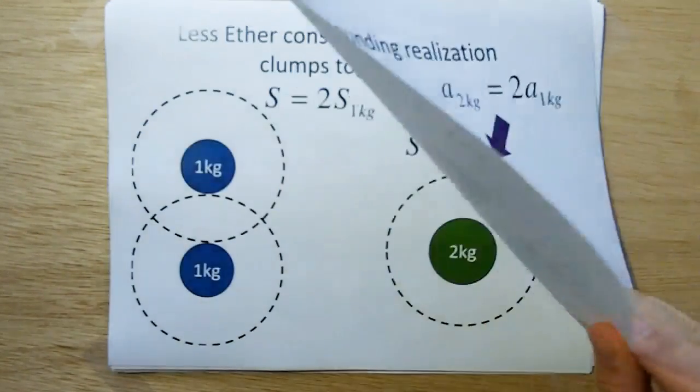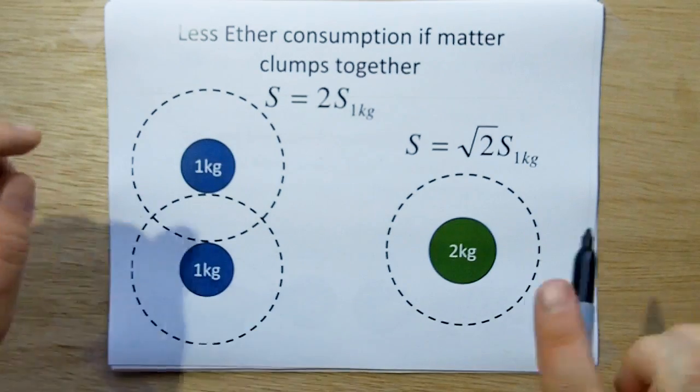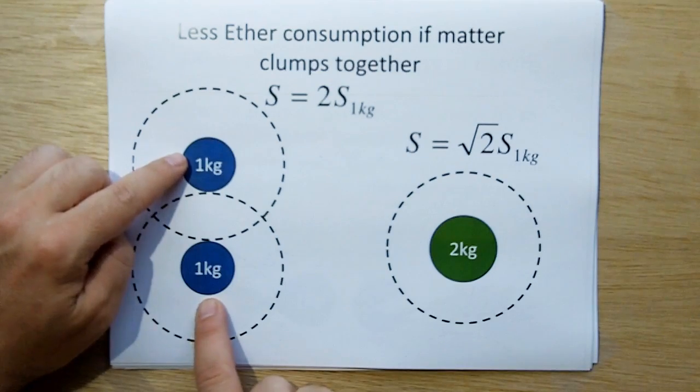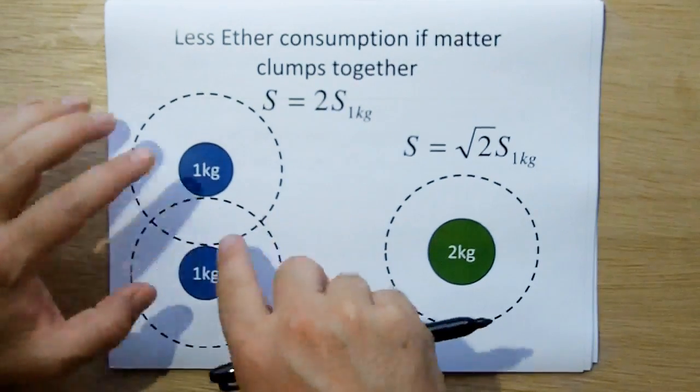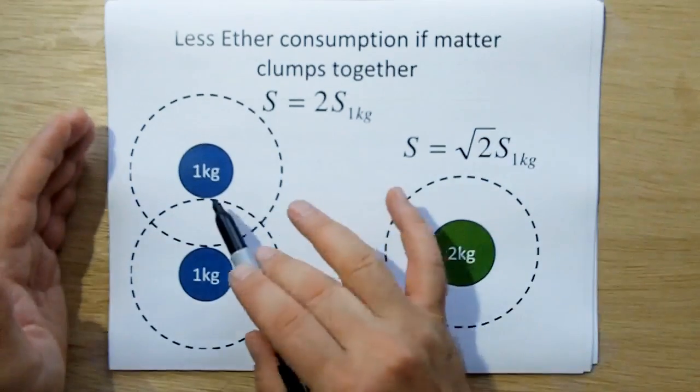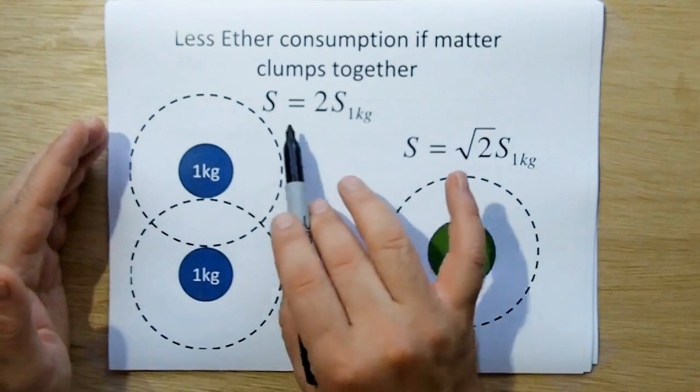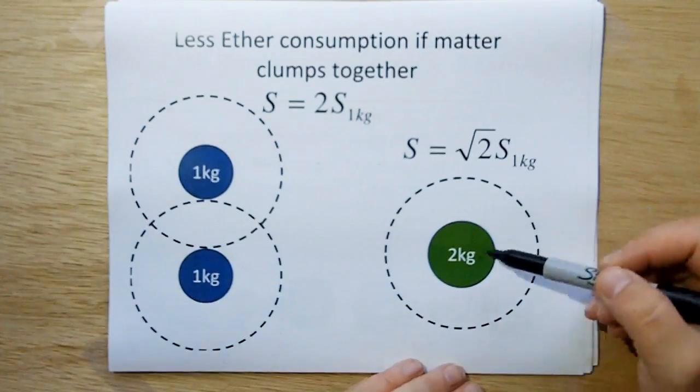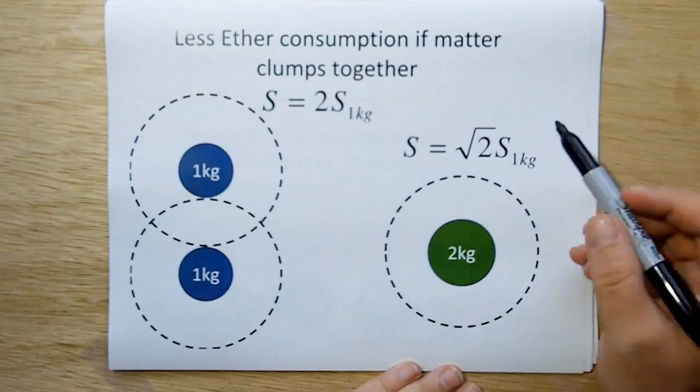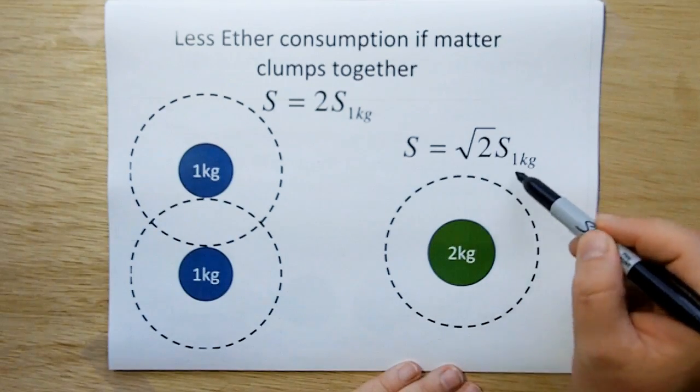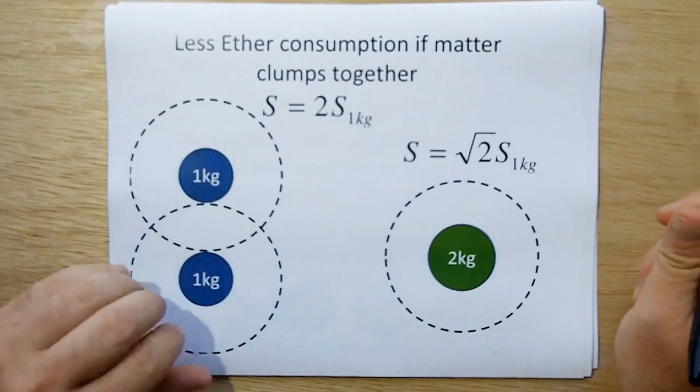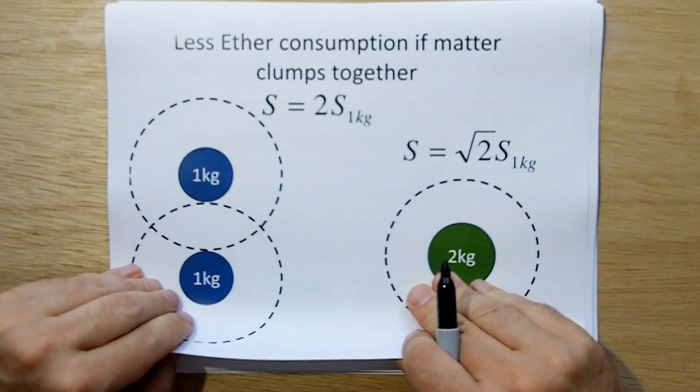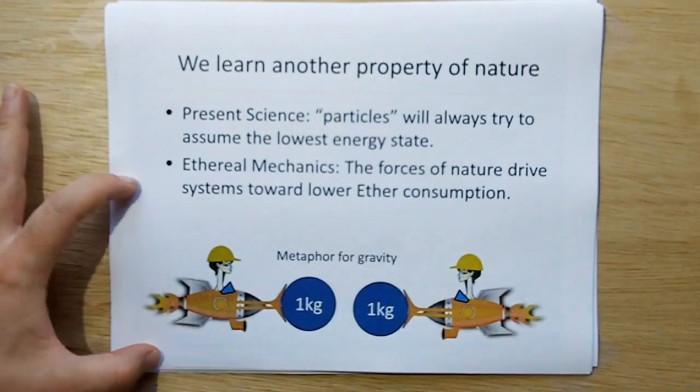Now, what does this mean? Why is this very important? Well, it means that if I have two one kilogram balls of matter here, and they're separated by, don't worry that these dotted lines overwrap, I'm just trying to stick them on the page, is their total ether consumption is going to be two times the consumption of a one kilogram block alone. But then if you blob them together into a single ball, well, their ether consumption is only going to be the square root of two times one individual block. And therefore, we actually conserve ether by allowing mass to clump together.